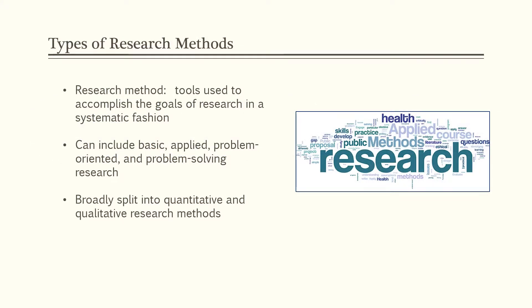So what types of research methods are out there? Research methods are defined as tools used to accomplish the goals of research in a systematic fashion. This can include basic, applied, problem-oriented, and problem-solving research. But in general, research methods are broadly split into quantitative and qualitative research methods, and that's what we're going to focus on for the remainder of this lecture.